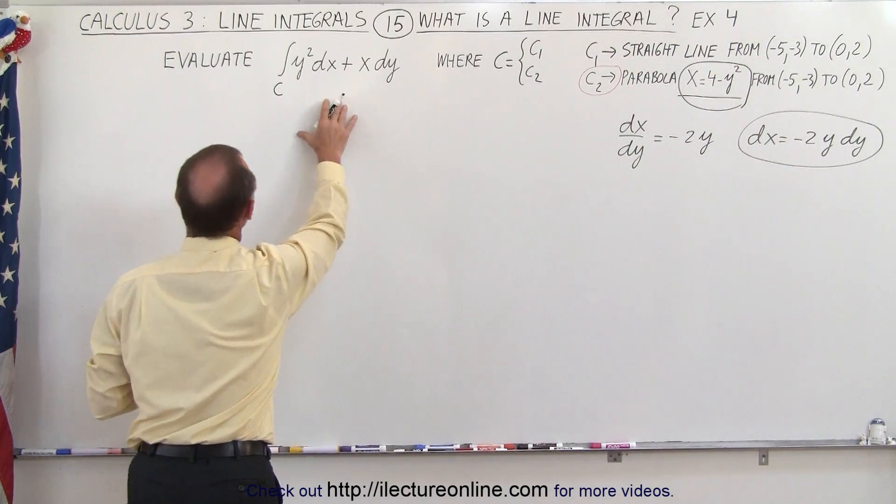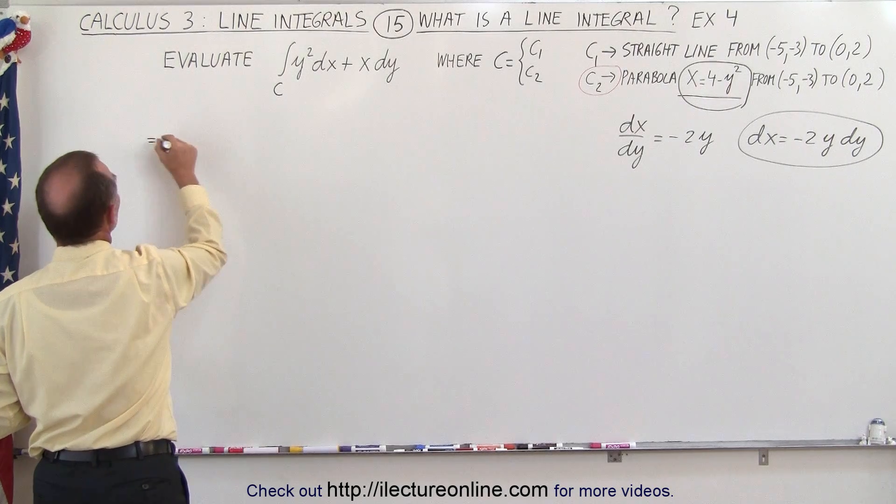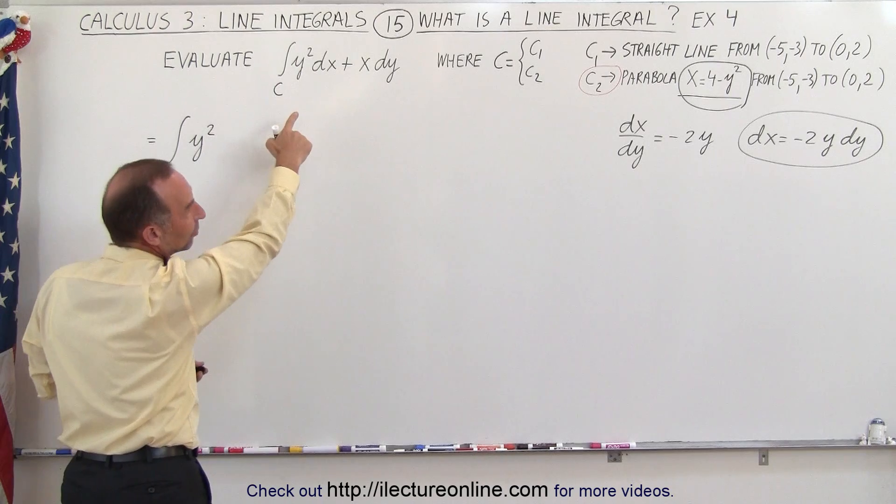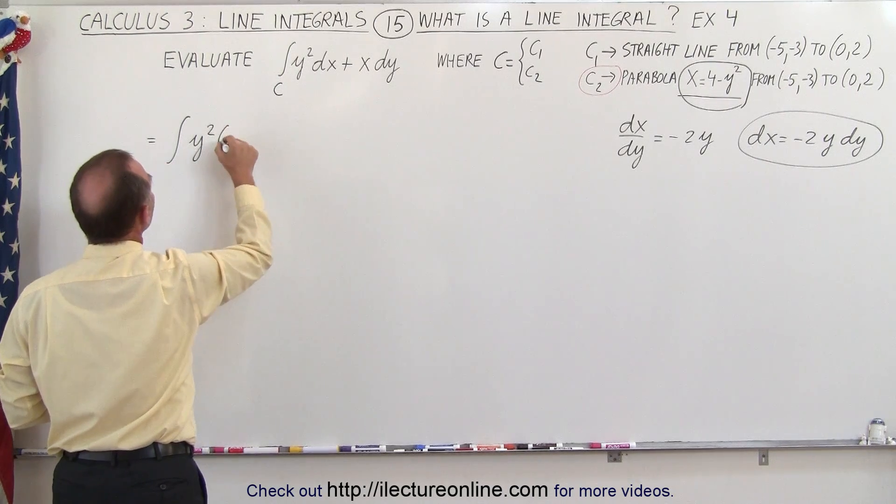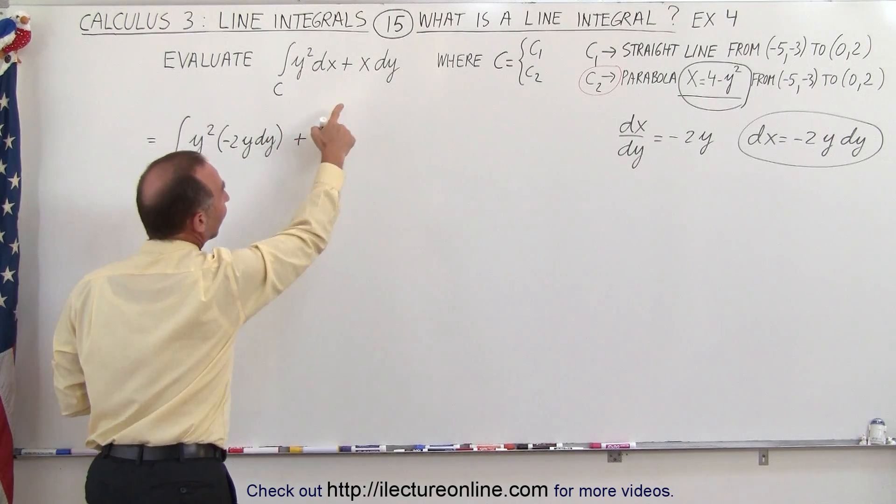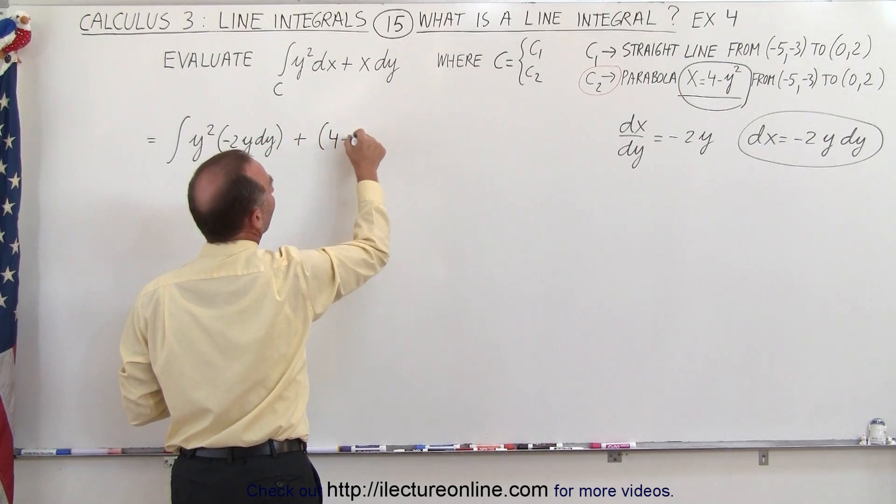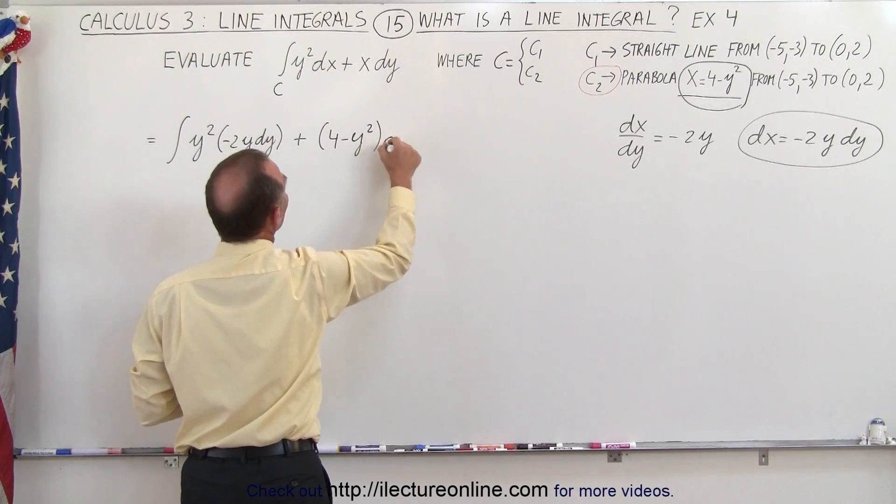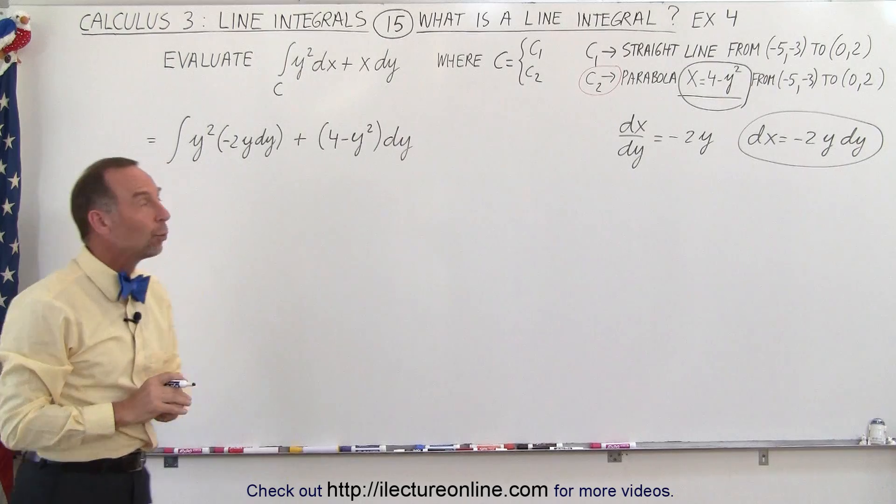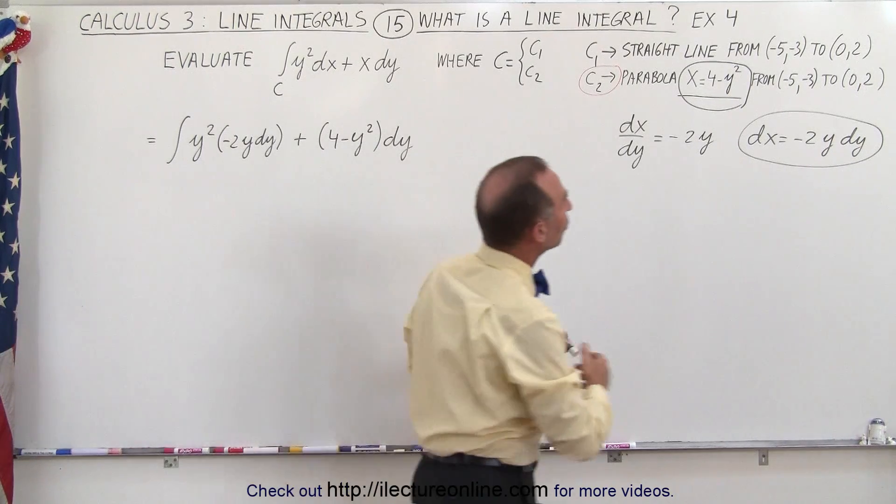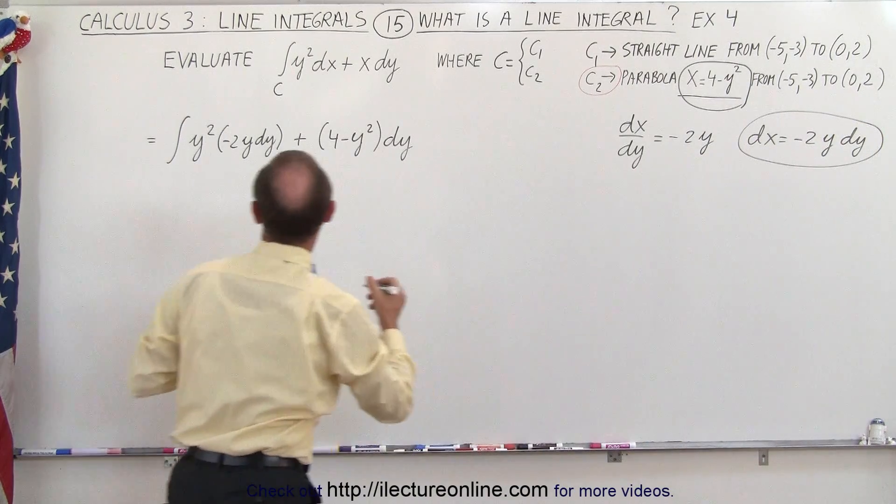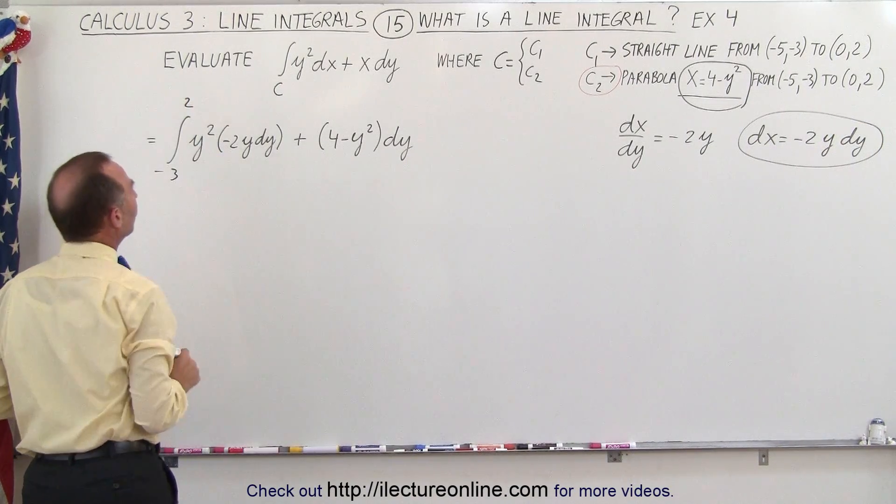Doing that, the integral will now look as follows. This is equal to the integral of y squared times minus 2y dy plus x, where x is 4 minus y squared, times dy. Notice the entire integral now depends only on y, and we realize that y changes from minus 3 to positive 2, so the limits of integration are from minus 3 to positive 2.